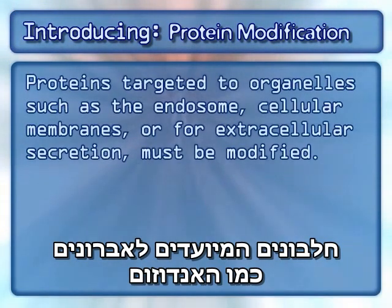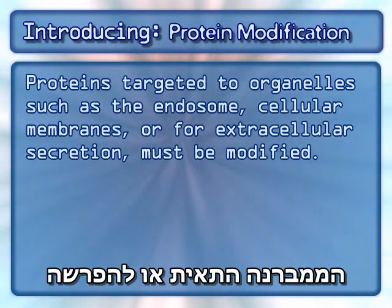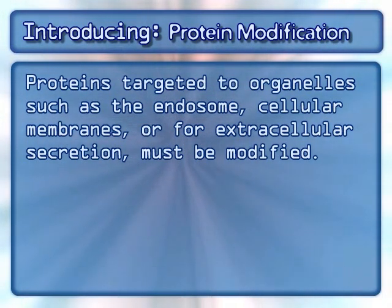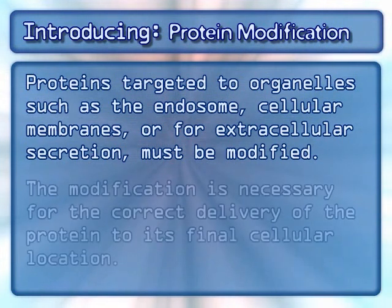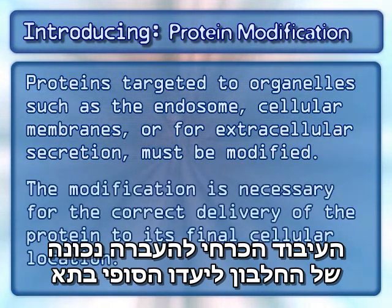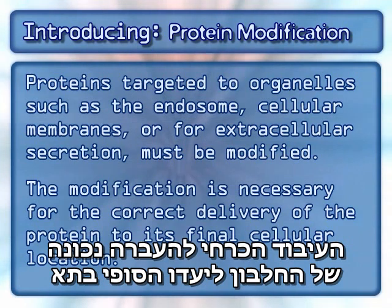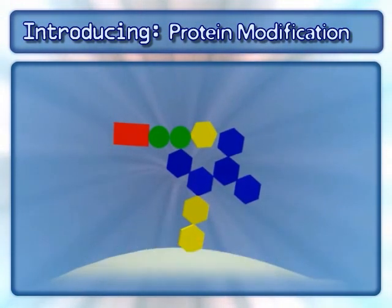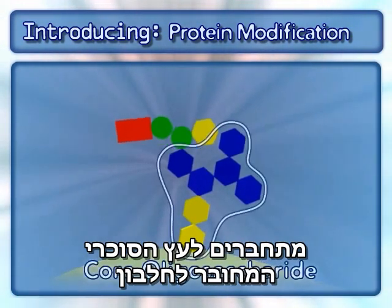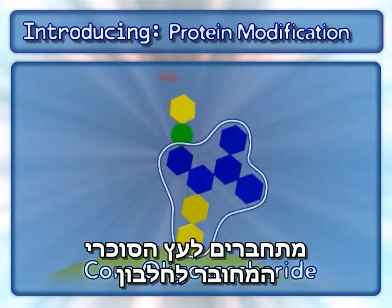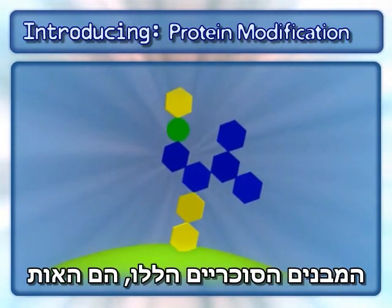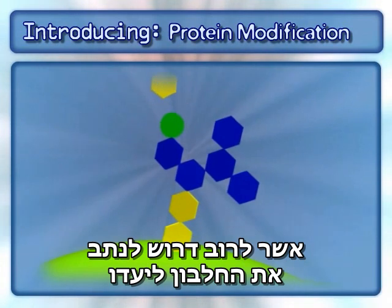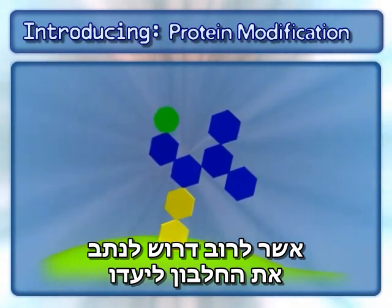Proteins targeted to organelles, such as the endosome, cellular membranes, or for extracellular secretion must be modified. The modification is necessary for the correct delivery of the protein to its final cellular location. The modification occurs when specific sugar molecules are added to a core oligosaccharide that is attached to the protein. These sugar complexes are the signal often required to direct the protein to its final destination.